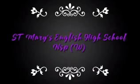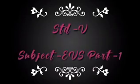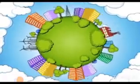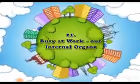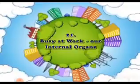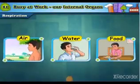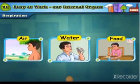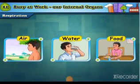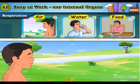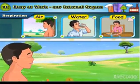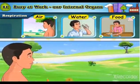Welcome to our online class, standard fifth, subject EVS, part 1. Lesson number 21: Busy at Work — Our Internal Organs. We all know we need air, water, and food to live. We need air for respiration. It is necessary for the body to get a continuous supply of oxygen from the air.